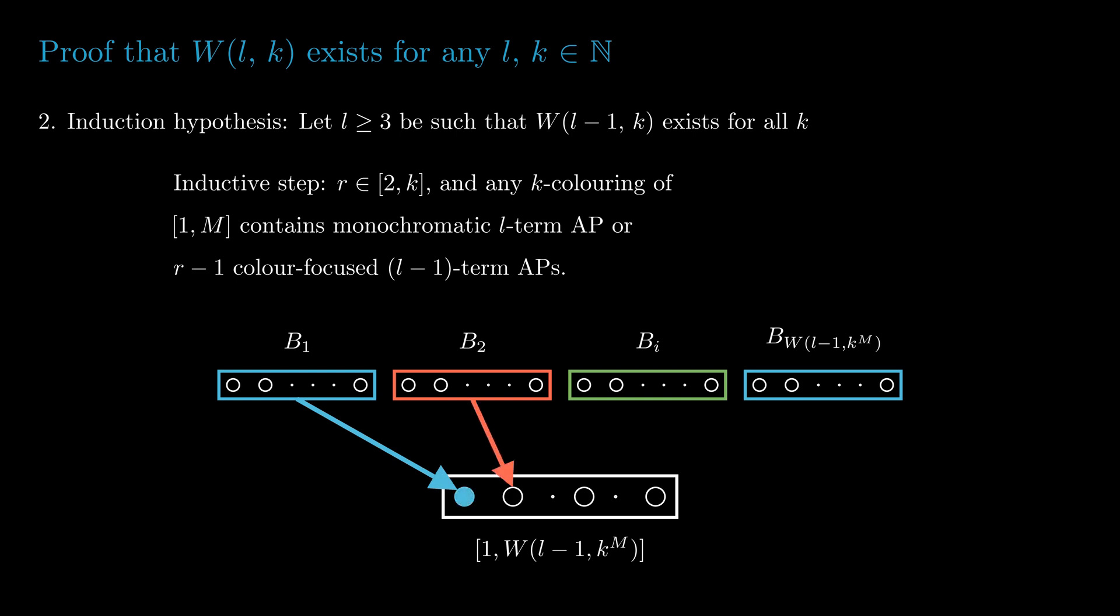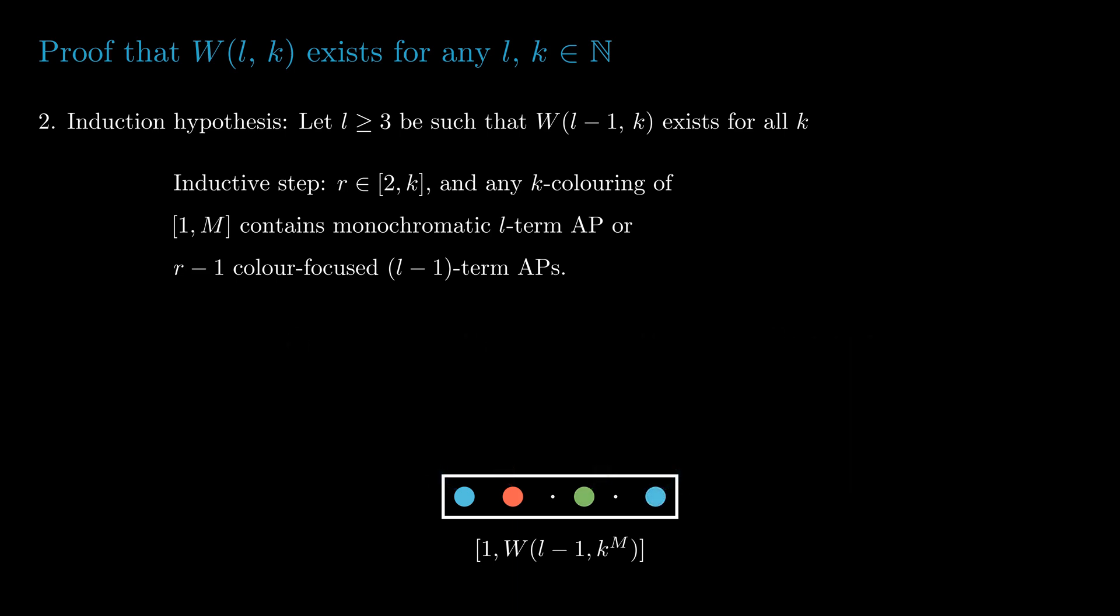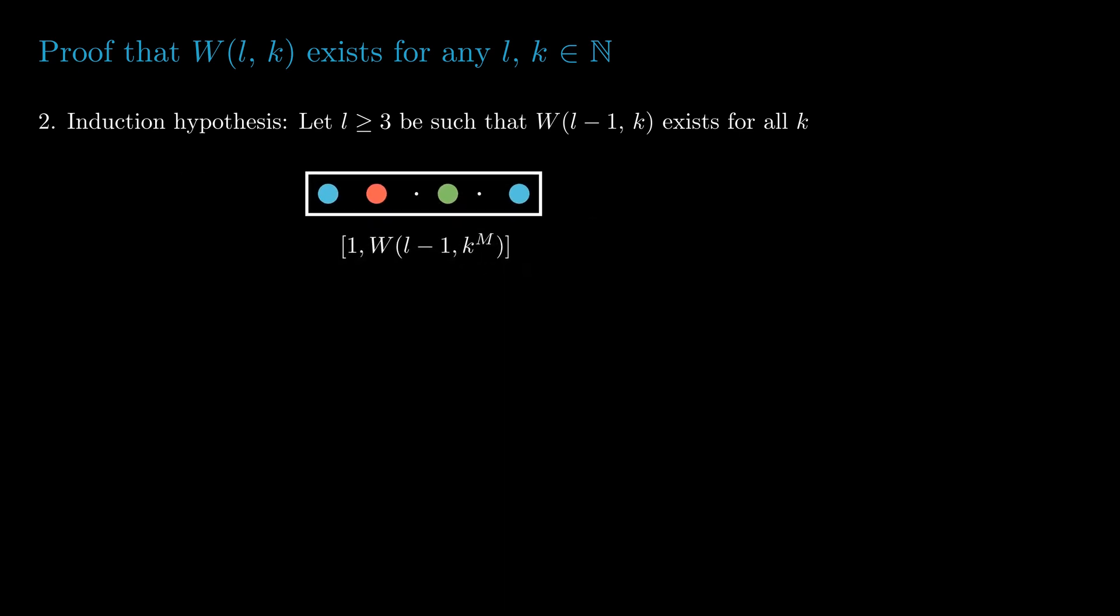The interval we now have is from 1 to W(l - 1, k^M), where each dot represents one of our original boxes. From the definition of van der Waerden's number, we know that this interval will contain an (l - 1)-term AP of our boxes.